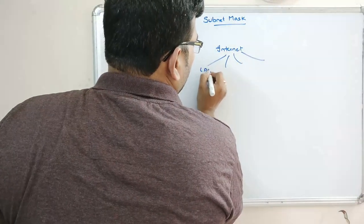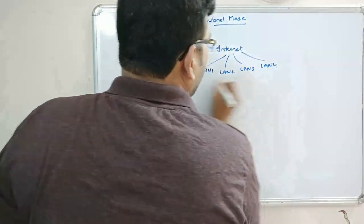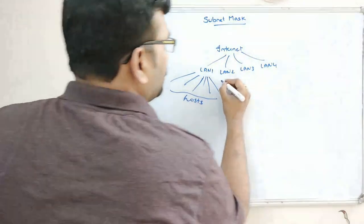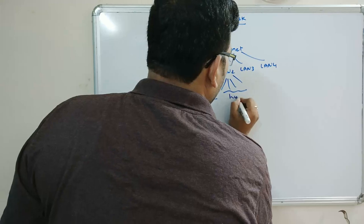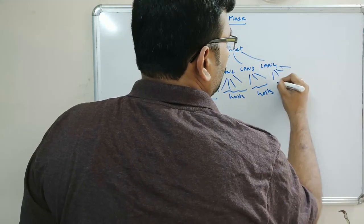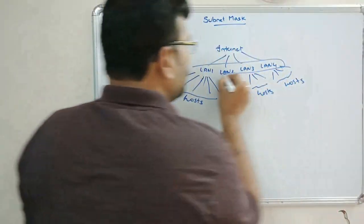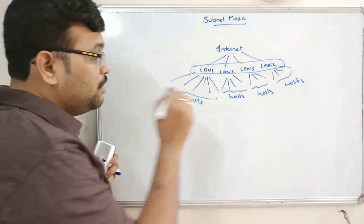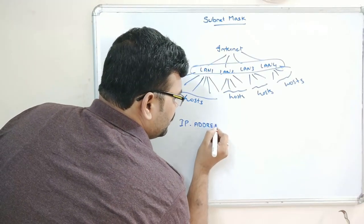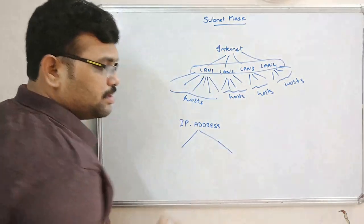In the internet we can have a lot of networks, and in each network there are different hosts. LAN 1, LAN 2, LAN 3, LAN 4 will each have different hosts. This network is called a subnet. Our IP address, as discussed in the previous session, covers two concepts.